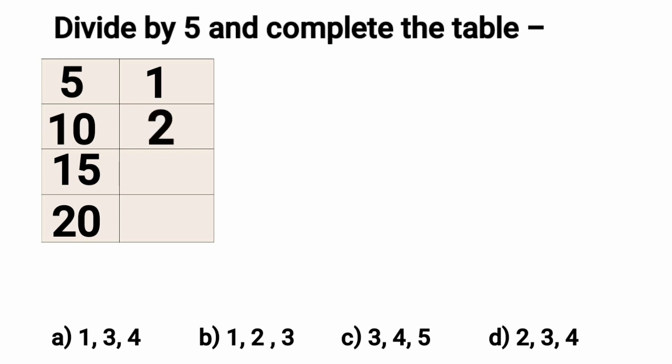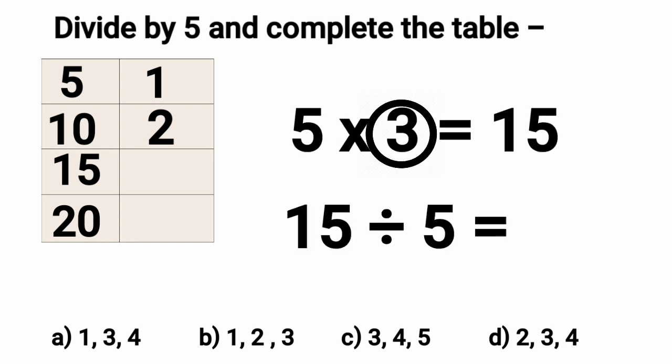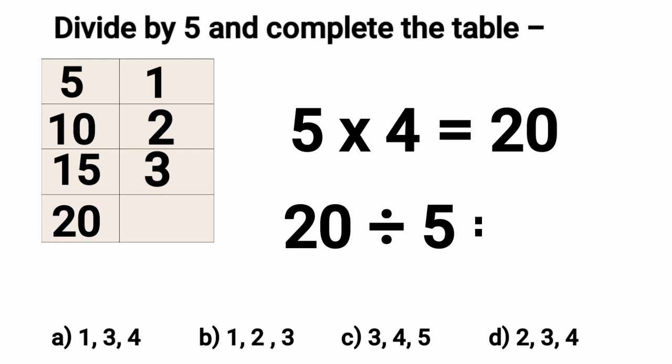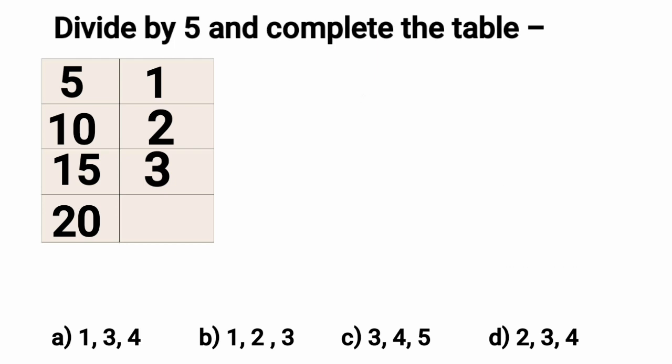Now we will divide 15 by 5. For this, 5 3's are 15. So, when we divide 15 by 5, the answer is 3. Write 3 in the table in front of 15. Likewise, 5 4's are 20. 20 divided by 5 is equal to 4. So, we write 4 in the table. 2, 3 and 4 are the answers.